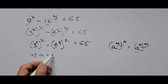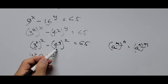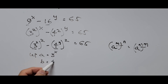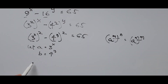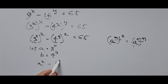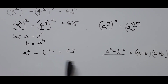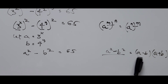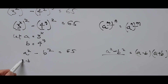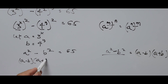Now we use the substitution method. Let a equal 3 to the power of X, and let b equal 4 raised to the power of Y. Substituting into the equation, we now have a squared minus b squared equals 65. For the left side, we use the difference of squares identity: a squared minus b squared equals (a minus b)(a plus b).